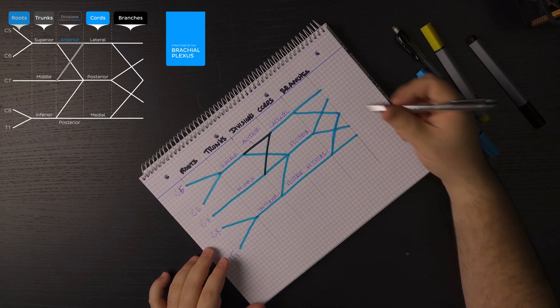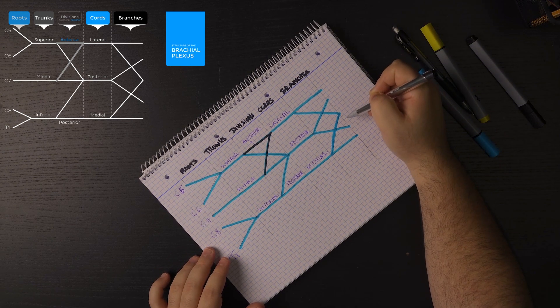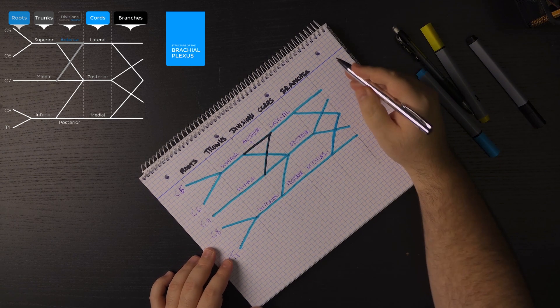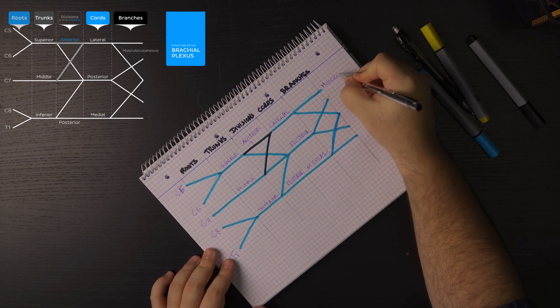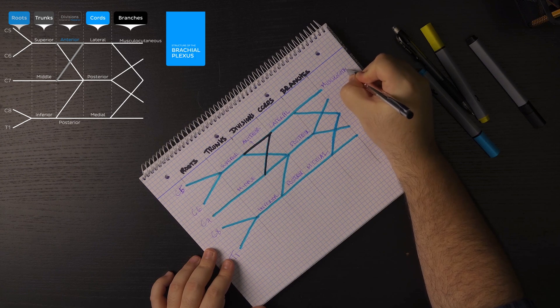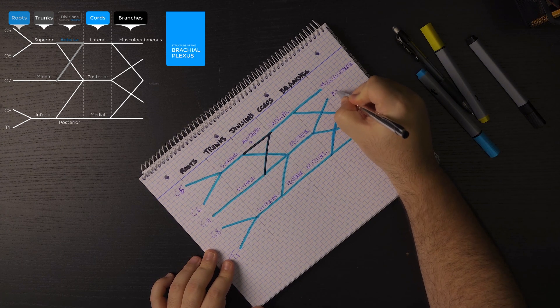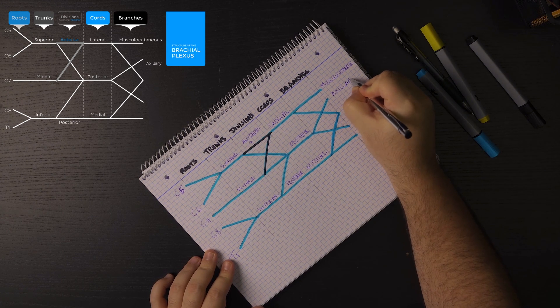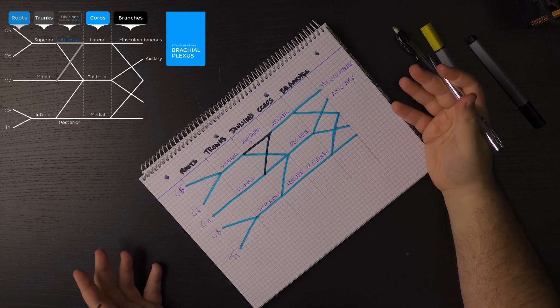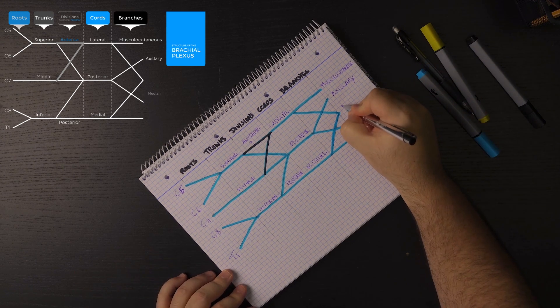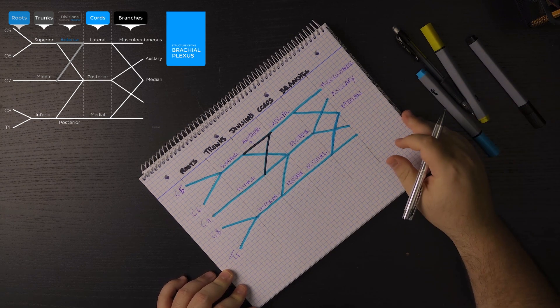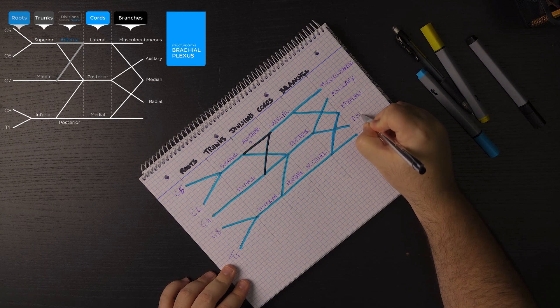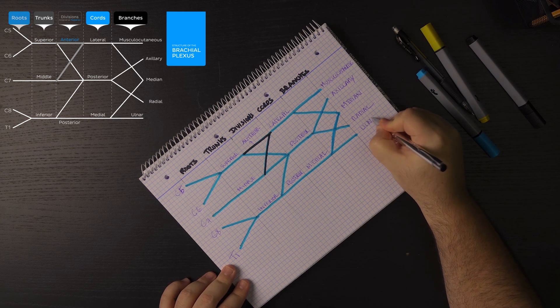And it's time for us to then label our branches starting at the top with the musculocutaneous. Below we have the axillary nerve. Then here in the middle, it's easy to remember, middle, median. So we have the median nerve. Then we have the radial and ulnar nerves.